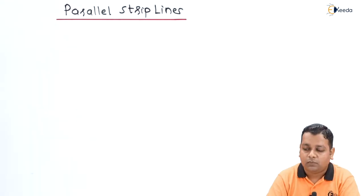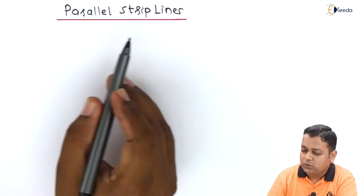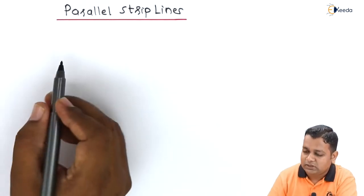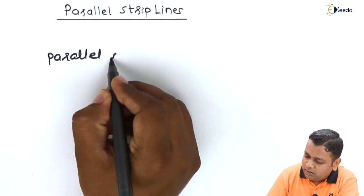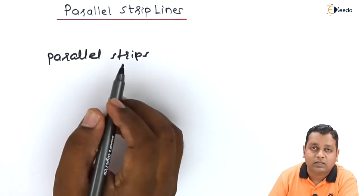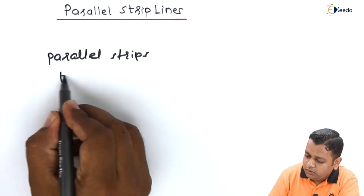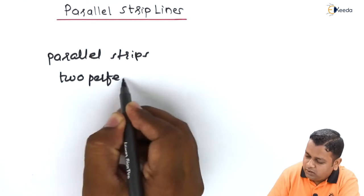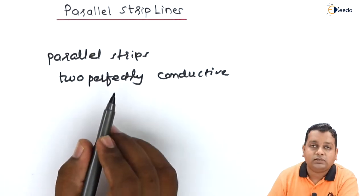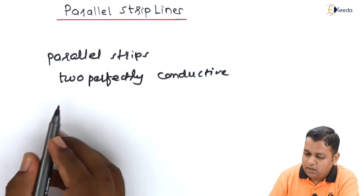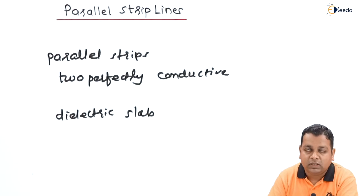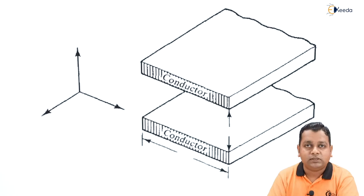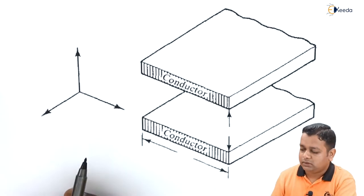We start with our topic: parallel strip line. In the parallel strip line, as the name suggests, we have parallel strips. These are made up of two perfectly conductive materials, separated by a dielectric slab that has a certain thickness to make the separation. For better understanding we can take the help of a schematic diagram. This is the schematic diagram with respect to the parallel strip line.